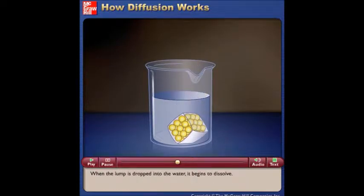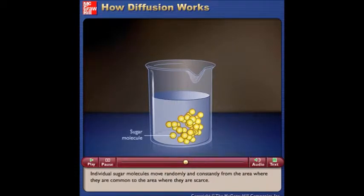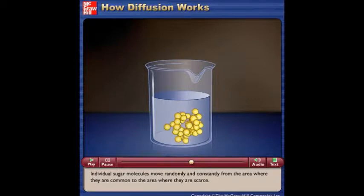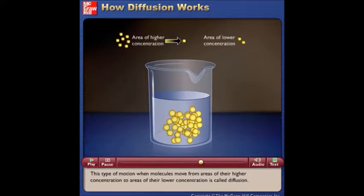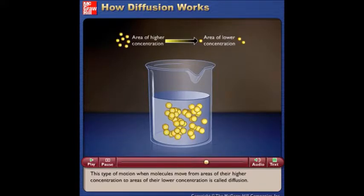When the lump is dropped into the water, it begins to dissolve. Individual sugar molecules move randomly and constantly from the area where they are common to the area where they are scarce. This type of motion, when molecules move from areas of their higher concentration to areas of their lower concentration, is called diffusion.